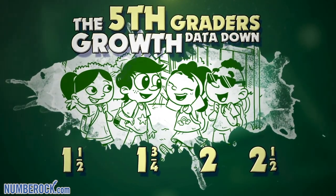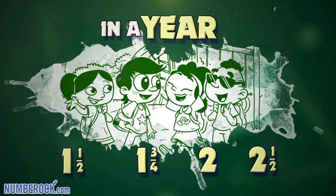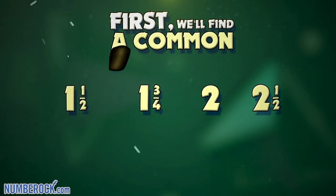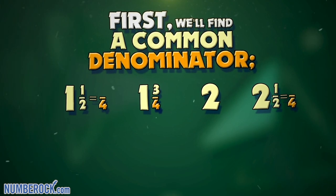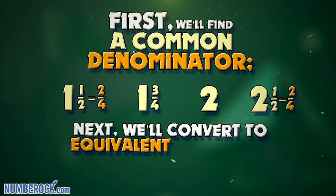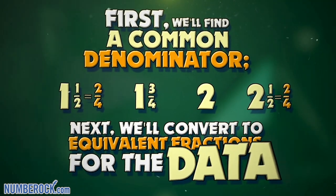Now we're writing the fifth graders' growth data down. How many inches they grew in a year is what we had found. First we'll find a common denominator. Next we'll convert to equivalent fractions for the data.